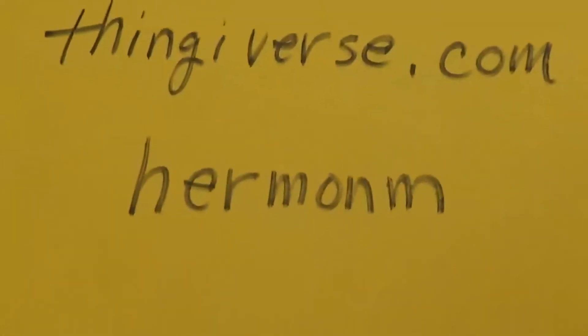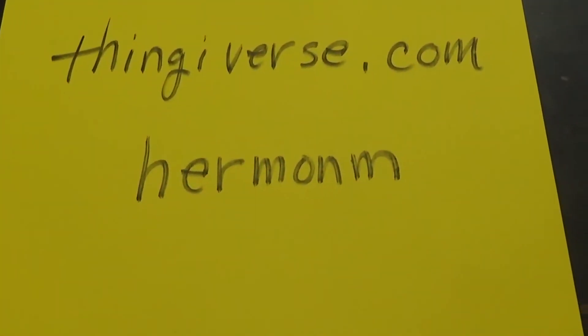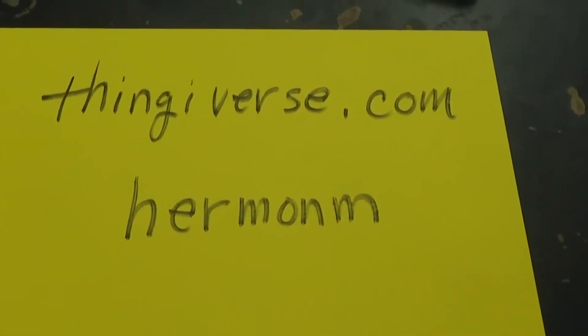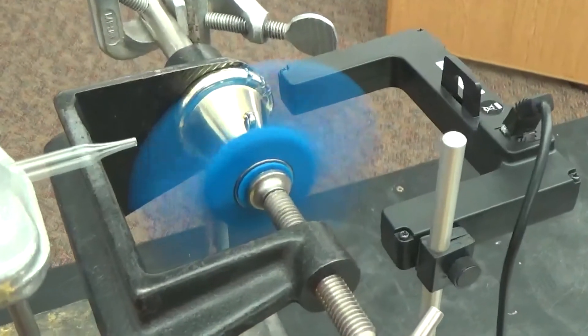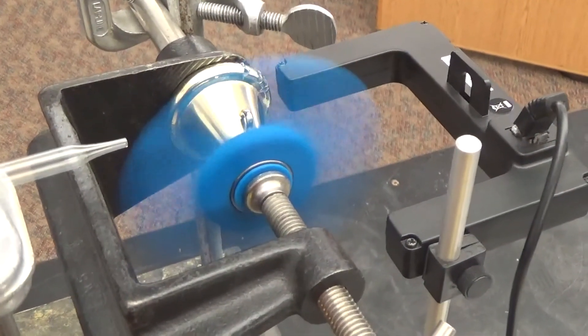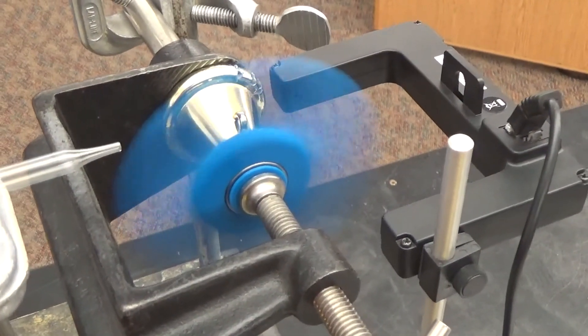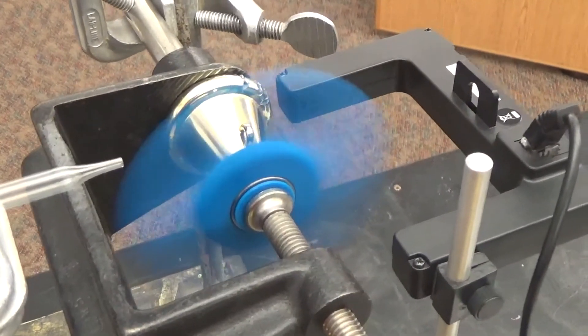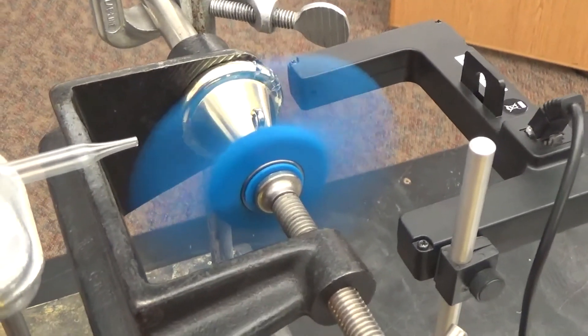If you're interested in how to make them, you can go to thingiverse.com and my username is Herman M. Put that in there and you'll be able to see and download your own fidget spinners. Alright, about 45 and a half rotations per second, about 2700 RPM.